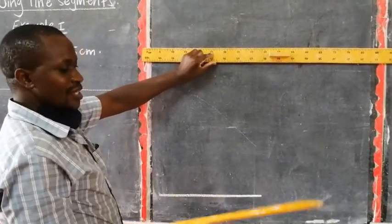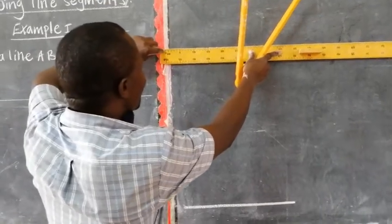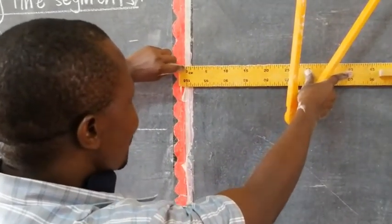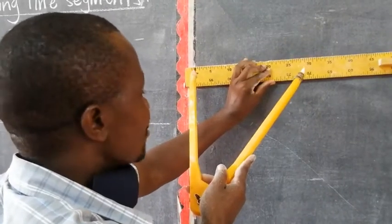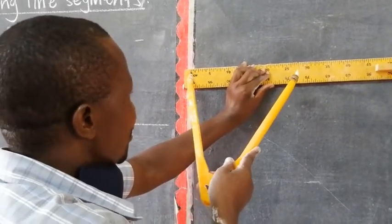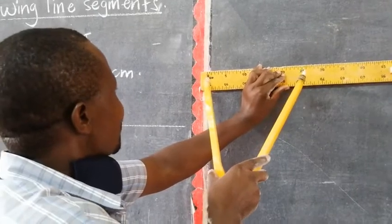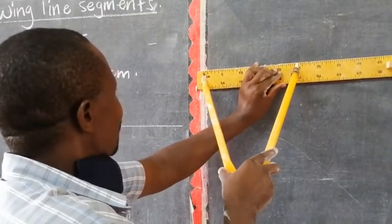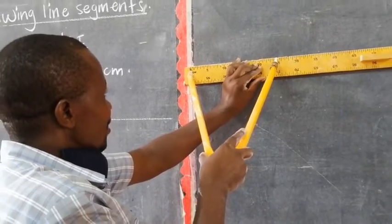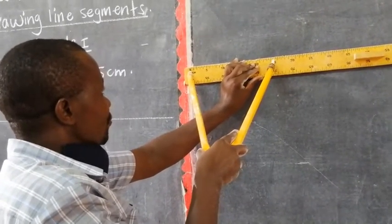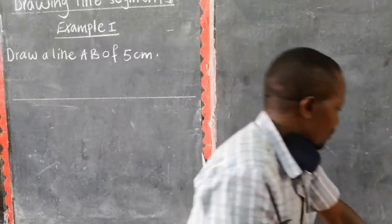When you are measuring, get your compass needle, put it in that line you have in centimeter, the first line, that long line on the side of centimeter. Your compass needle should be on the starting line on the ruler, then your pencil should be in 5. After making like this, then you remove.